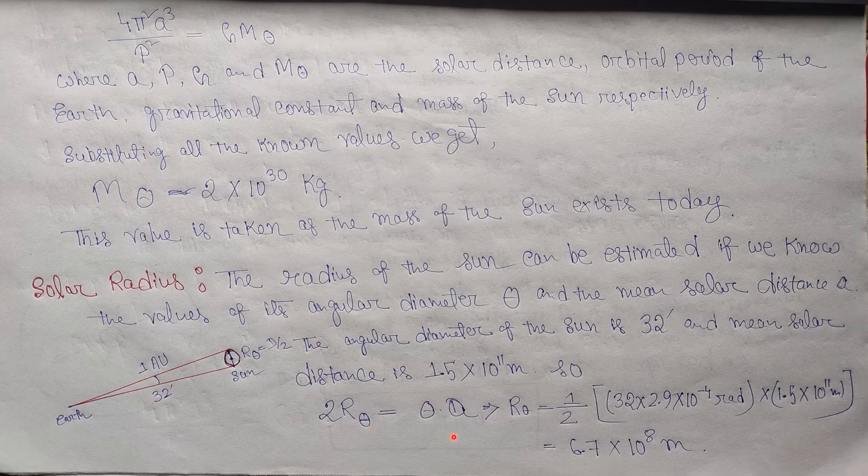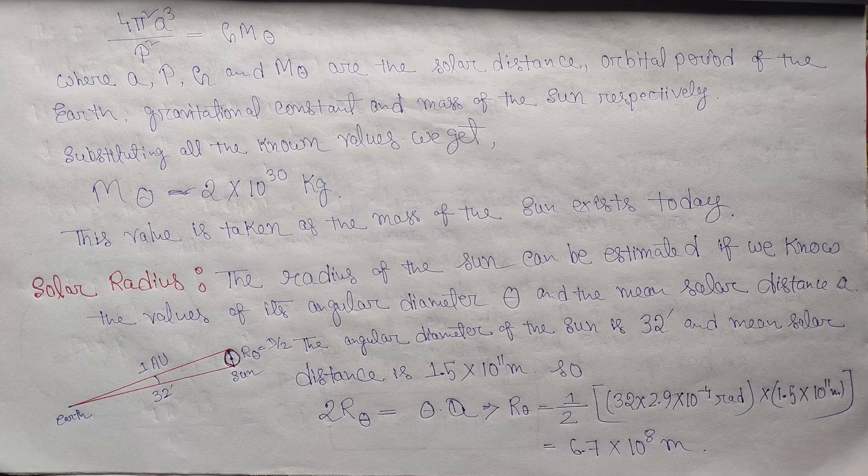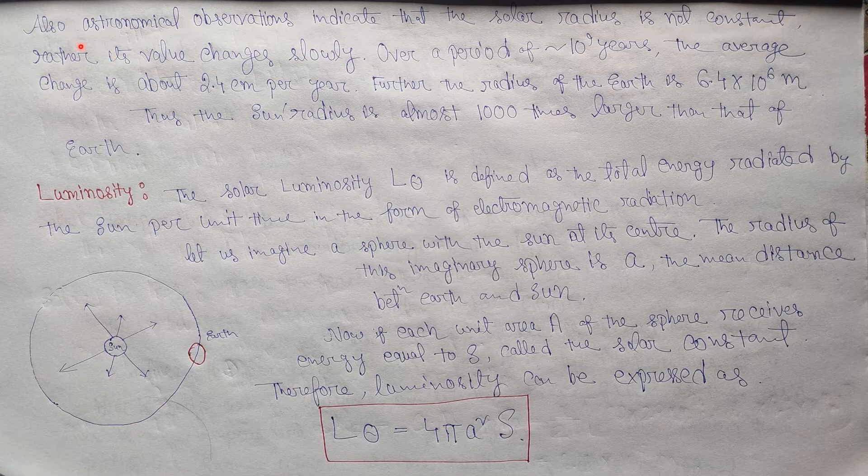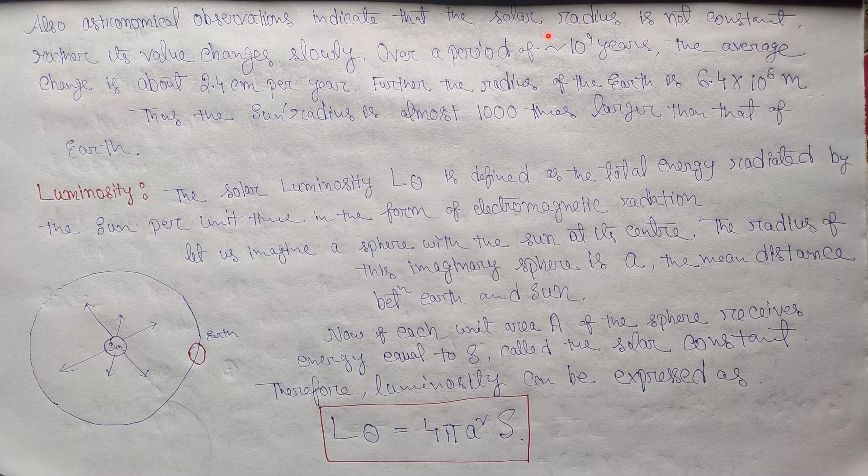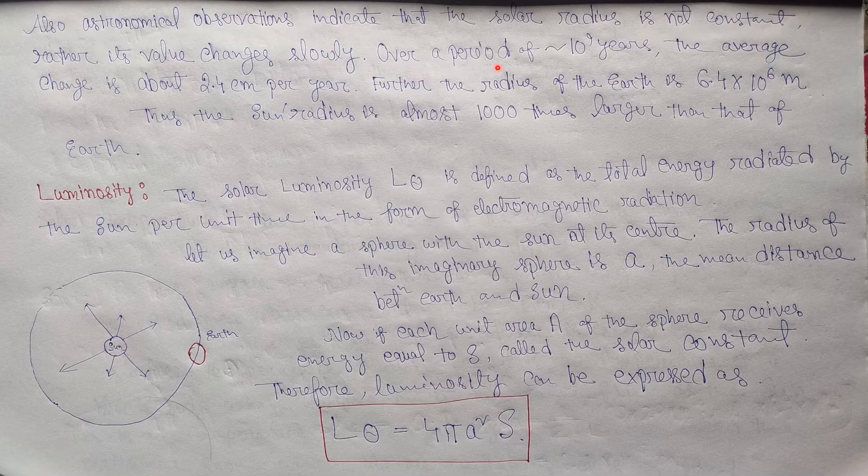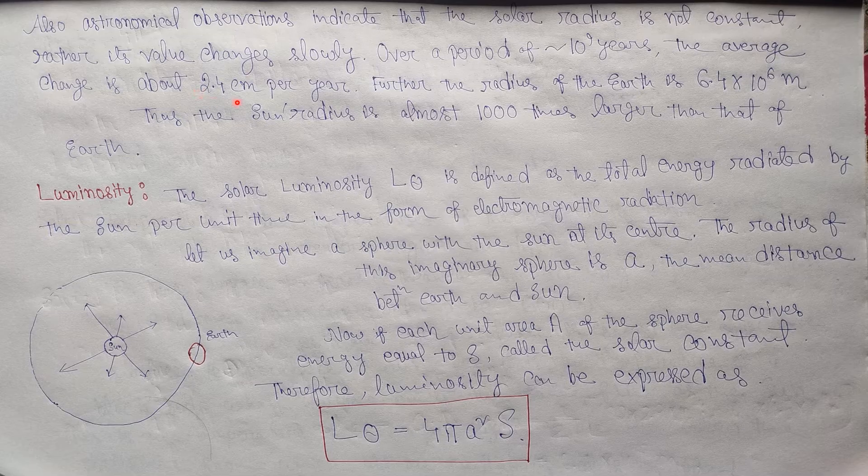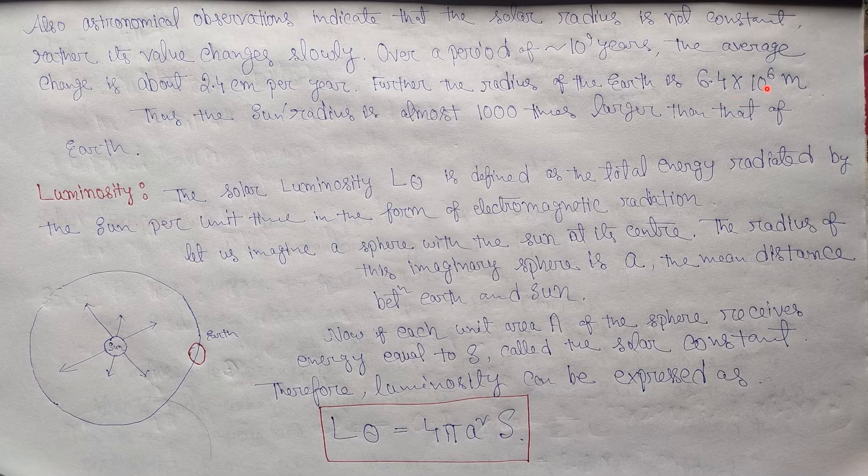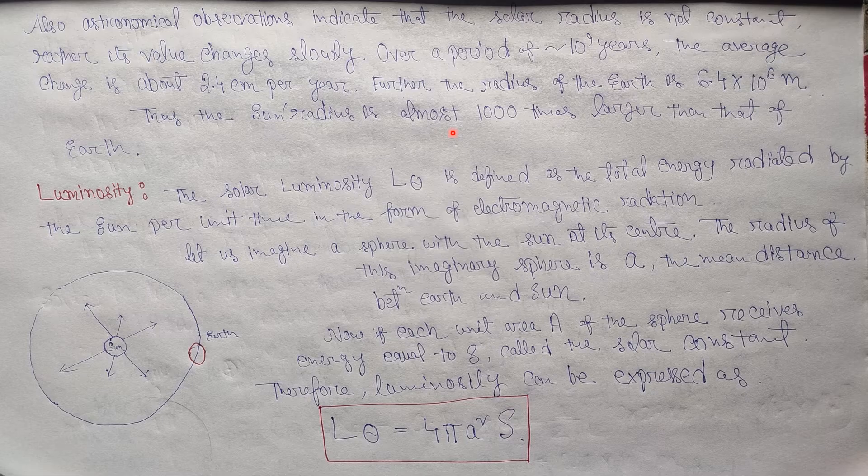From basic geometry, we get the value of R☉ = 6.7 × 10^8 meters, which is the radius of our sun, also known as solar radius. Also, astronomical observations indicate that the solar radius is not constant; rather, its value changes slowly over a period of approximately 10^9 years. The average change is about 2.4 centimeters per year. Further, the radius of the earth is about 6.4 × 10^6 meters, thus the sun's radius is almost 1000 times larger than that of earth.